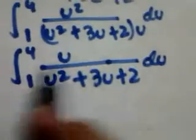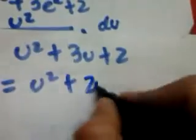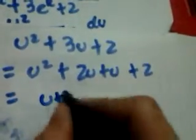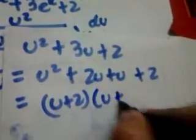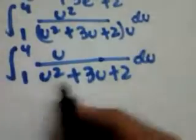But still we cannot integrate this — we need to simplify more. We can factorize the denominator. u squared plus 3u plus 2 becomes u squared plus 2u plus u plus 2, which factors as (u + 2)(u + 1). So let's substitute that factorized form into the integral, giving us a more simple form — though still we cannot integrate it directly.